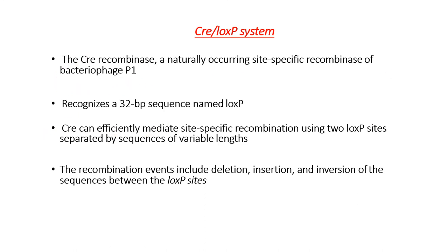The 32 base pair sequence named loxP allows Cre to efficiently mediate site-specific recombination using two loxP sites separated by a sequence of variable length. The recombination events include deletion, insertion, and inversion of the sequence at the loxP site.